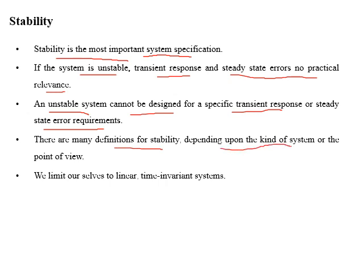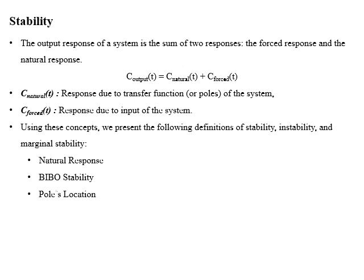There are many definitions for stability depending on the kind of system or point of view. Throughout this course we will limit our study to linear time invariant systems. As studied in the last lecture, the total response of a system is the sum of two responses: forced response and natural response. Natural response is due to the transfer function or the poles of the system, while forced response is due to the input of the system.